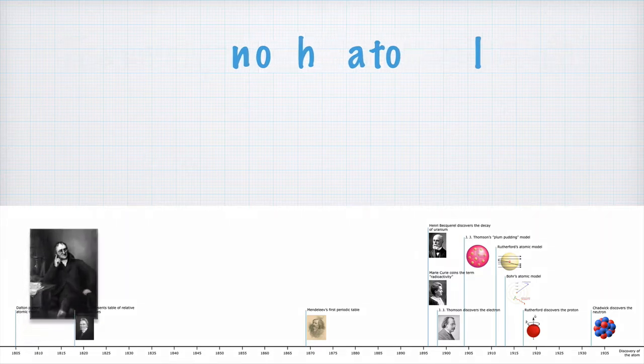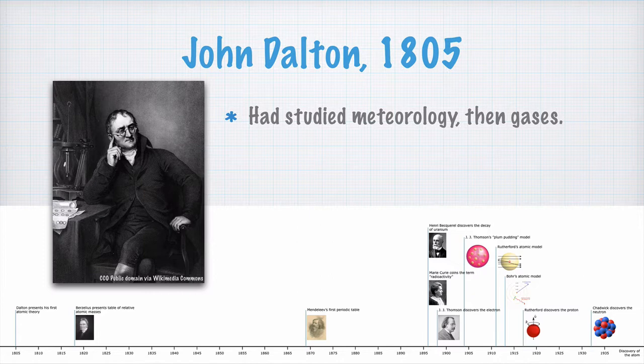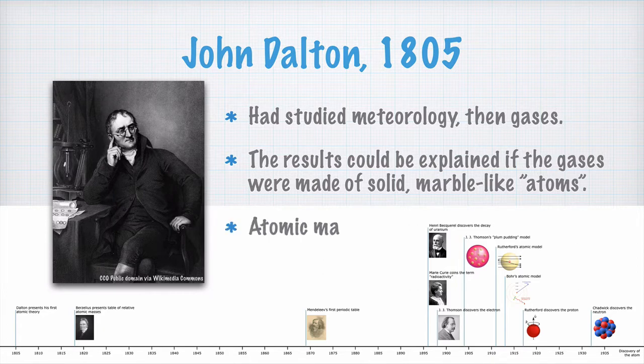I would like to introduce you to John Dalton. He had first studied meteorology and then continued by studying gases and their properties. The results of his experiments could be explained if one considered the gases as made of tiny particles, marble-like atoms, whose mass decided the atom's properties. In this way, Dalton proposed the first scientific atomic theory and is often credited with being the father of the atomic theory.